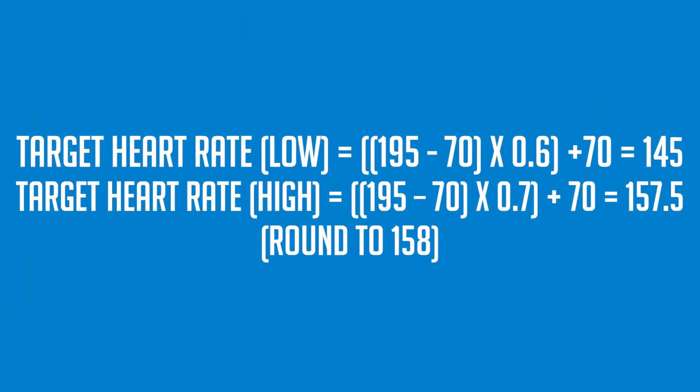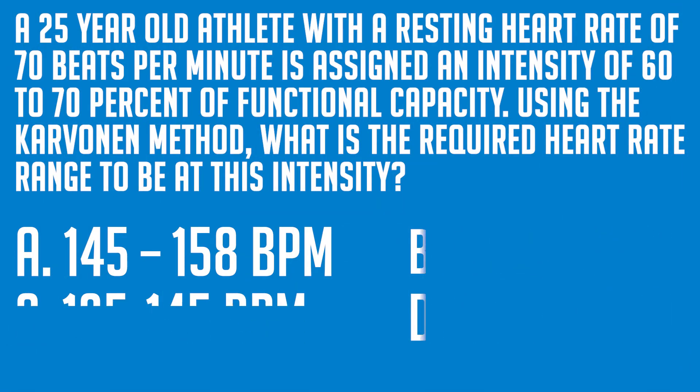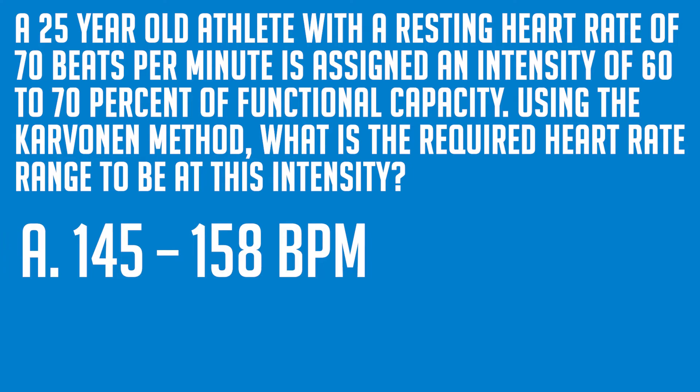Our low target heart rate is 195 minus 70 times 0.6 plus 70. This gives us 145. And our high target heart rate is 195 minus 70 times 0.7 plus 70 equals 157.5. And rounding that up to the nearest beat per minute is 158. With this calculation complete, we can see that answer A is the correct answer and that the athlete's target heart rate should be between 145 and 158 beats per minute.